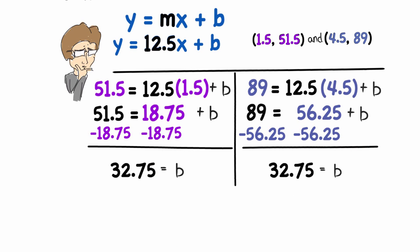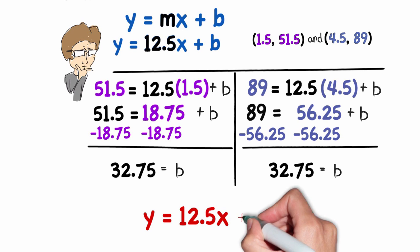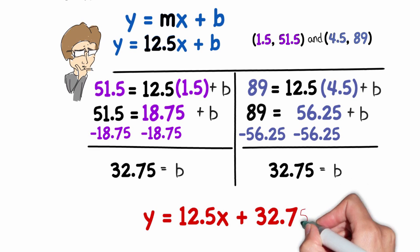So now I can write my equation. y is equal to 12.5x plus 32.75. This equation allows us to predict how long it will be between eruptions based on how long an eruption lasted.